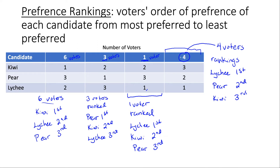The top row is always going to be how many people are voting — how many people share a specific preference ranking. When we have a four up here, it means there are four voters and they all share the same preference ranking. Just because we see a three or a two in the ranking rows doesn't mean there are three or two voters. The number of voters is always indicated in the top row; everything below that is their preference ranking.